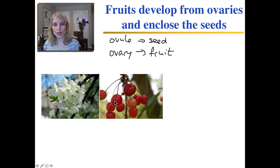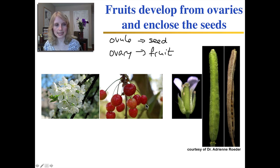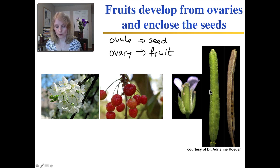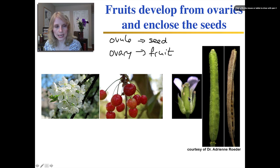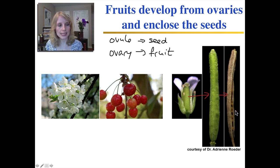It's a little tricky to see with those, but you can more clearly see it in this picture. Here's the flower and here are the ovaries inside — this becomes the fruit. And then the fruit eventually dries out and you can see the seeds exposed inside.